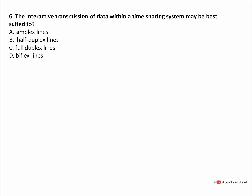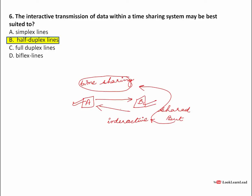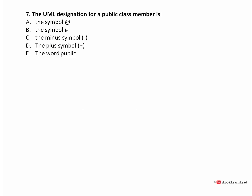Interactive transmission of data within a time-sharing system — the important word here is time sharing. Time sharing means the communication by A and communication by B is shared but by time, not simultaneously. A is communicating with B and B is communicating with A interactively, but one at a time. So the answer would be half duplex — while A is communicating, B would not do anything, and vice versa. That is time sharing.